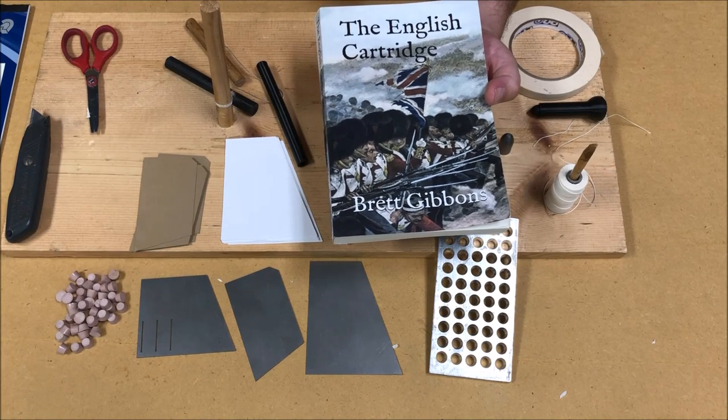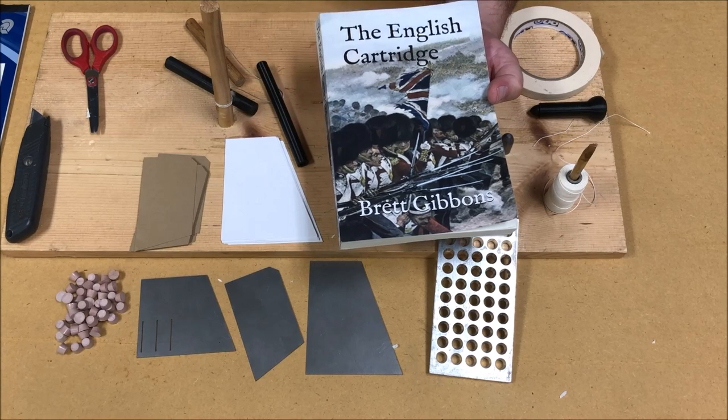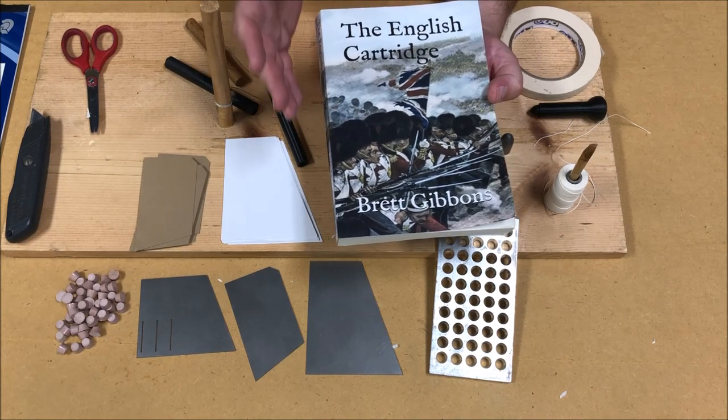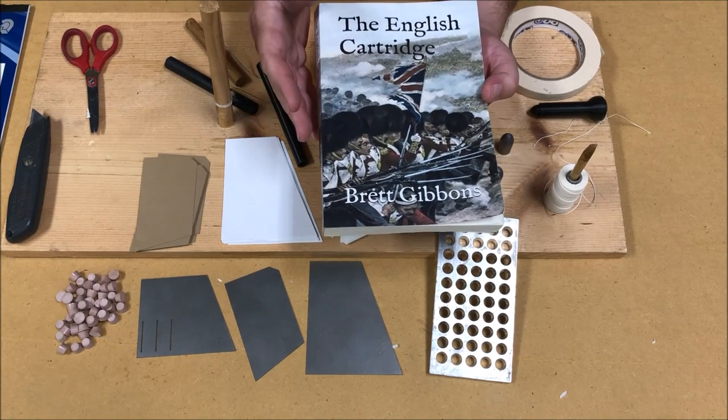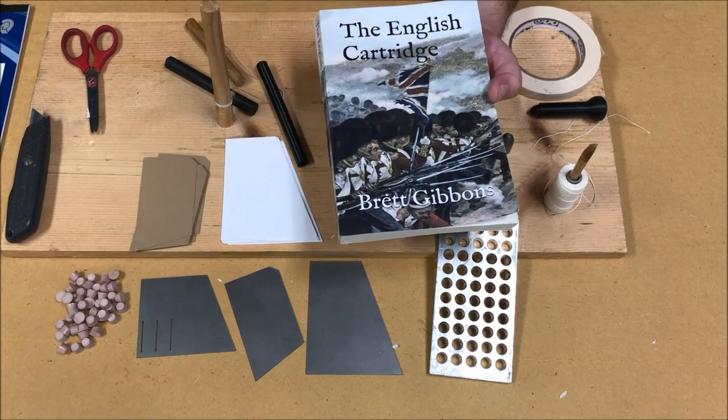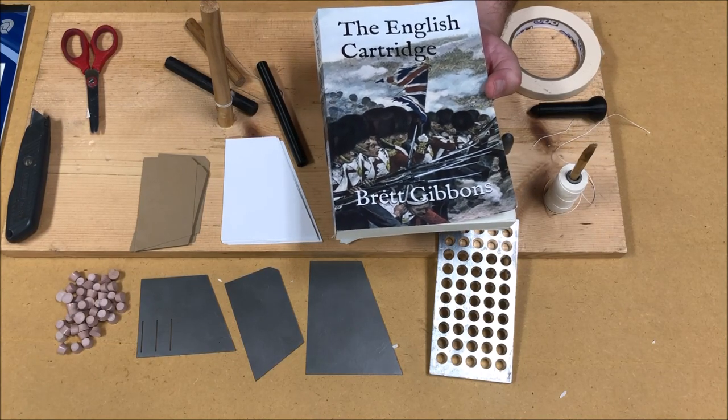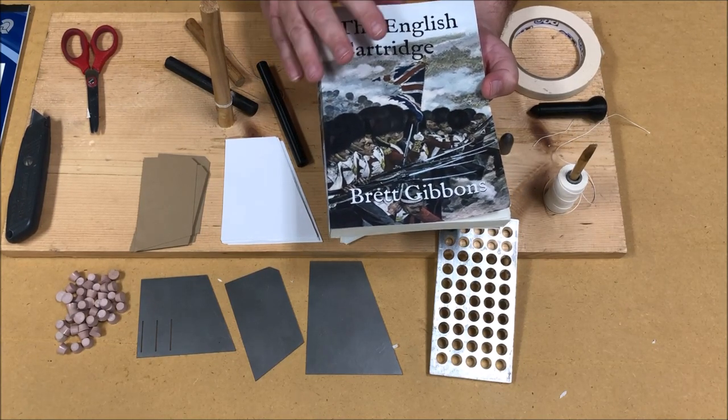This book basically covers the evolution of the 1853 Enfield ammunition from its prototype in the P-51 rifled musket, then to the adoption of the P-53. They tried making larger diameter bullets so they more precision fit to the bore, to backtracking away from that. This book is just fantastic.